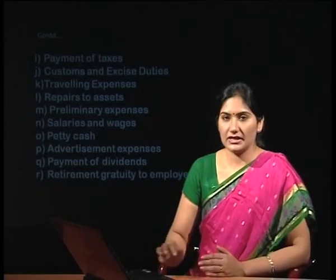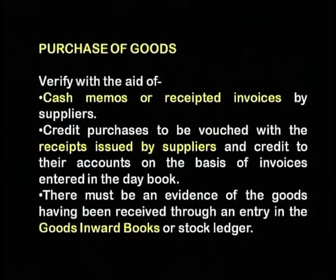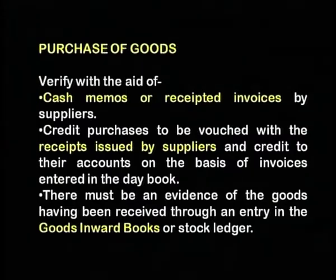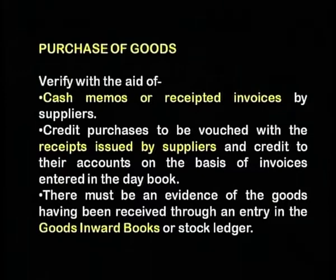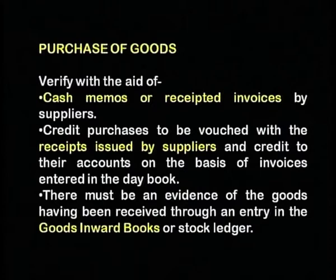One by one we shall be taking up each item of payment and looking at the vouching part. The first and foremost is the purchase of goods. The purchase of goods can be verified with the aid of cash memos or receipted invoices by the suppliers. Credit purchases shall be vouched with receipts issued by suppliers and credit to their accounts on the basis of invoices entered in the day book. When credit purchases are received into the entity, they shall be entered in the goods inward received book or in the stock ledger.